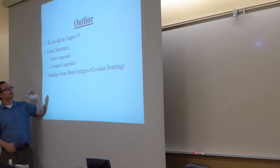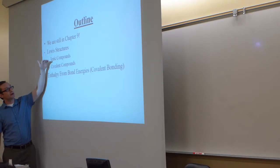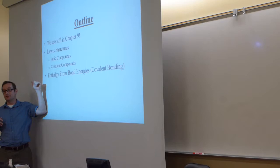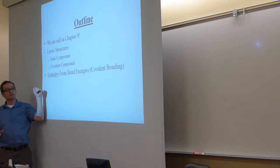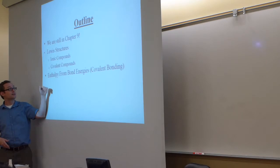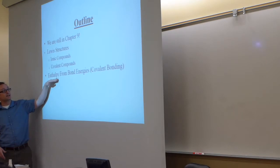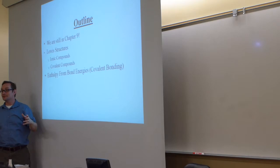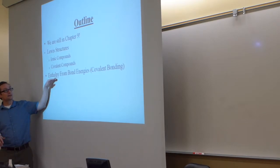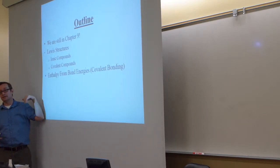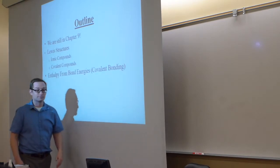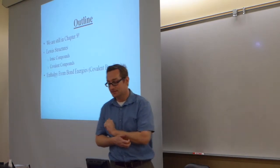We'll do Lewis structures of ionic compounds and covalent compounds. In Chem 107 you may have learned it from a covalent compound standpoint, but we'll also do ionic compounds. And if we have the ability to draw structures, we can do another estimation of bond enthalpy using bond energies — which is kind of a lot of fun.